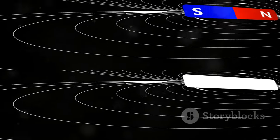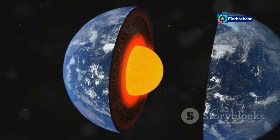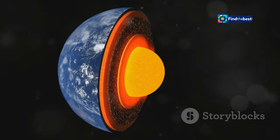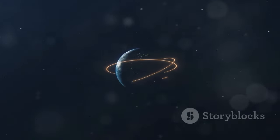These currents, combined with the Earth's rotation, create electric currents. This process is known as the dynamo effect. The dynamo effect generates electric currents that in turn produce a magnetic field. This magnetic field extends far out into space, creating the magnetosphere that protects us from solar radiation.